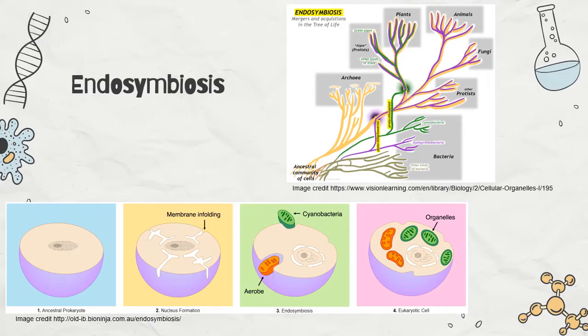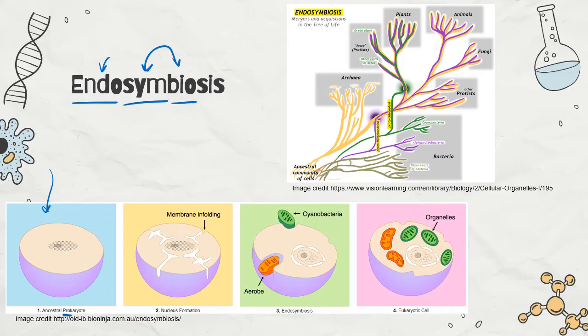The theory of endosymbiosis is so cool. Endo means inside, sym means together, and bio means life. So we're talking about cells going inside each other and then living happily ever after together. The story goes like this: we had this ancestral host cell — it was a prokaryote, a no-nucleus bacteria cell.